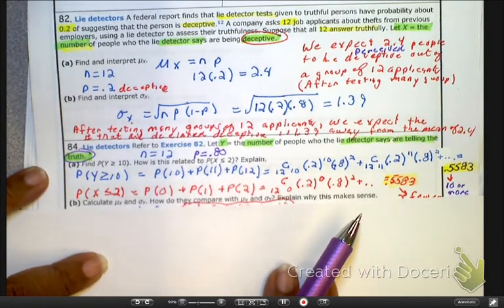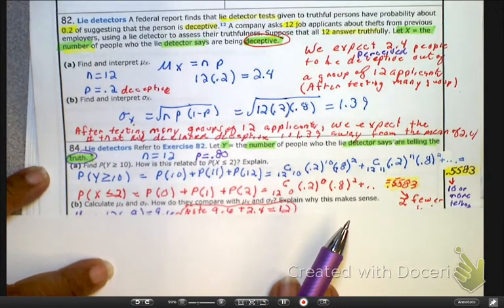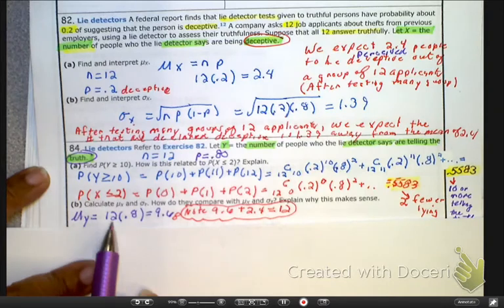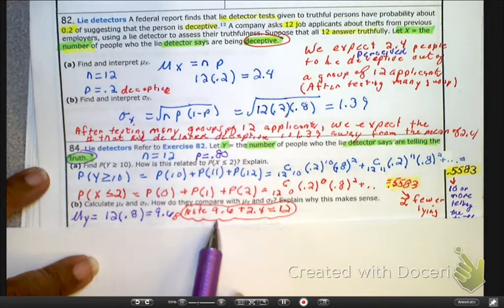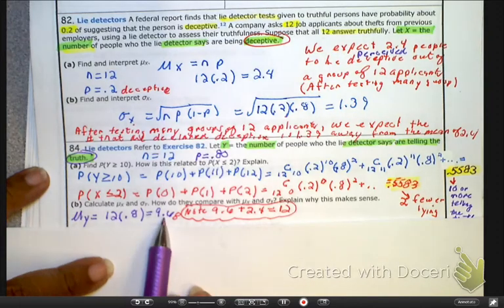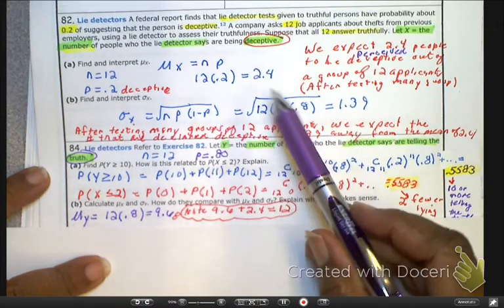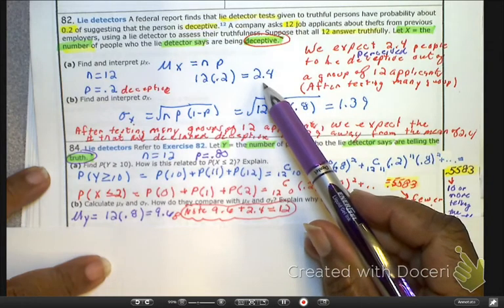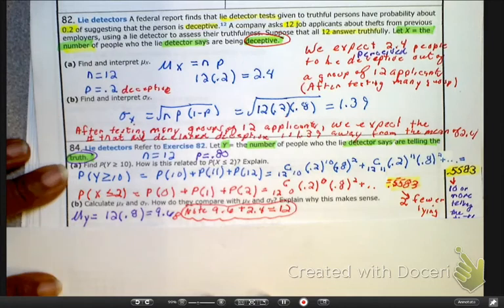Now, the next thing I want to do is calculate the mean and the standard deviation. So, you've got the equation, plug it in, here, you've got 12, you've got 80% are considered to be truthful, just do the math. And please note here that this 9.6 that you got for the mean of being truthful plus the 2.4 where you got from the mean of being deceptive added up to be all the 12 people. Well, that makes sense.